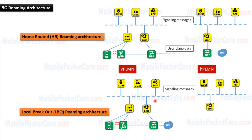To perform this, the control plane in the visited network will need to communicate with the control plane in the home network in order to exchange signaling messages. So we need a method to connect between the control plane in the visited network and the control plane in the home network, which will be used in both Home Routed and Local Breakout roaming architectures. And we need a method to connect between the user plane in the visited network and the user plane in the home network, which will be used in Home Routed roaming architecture.